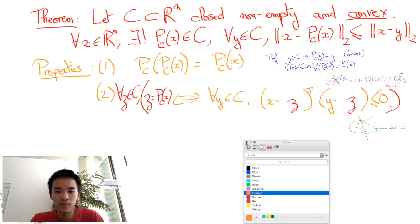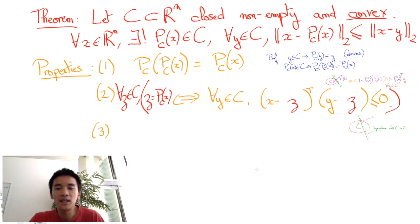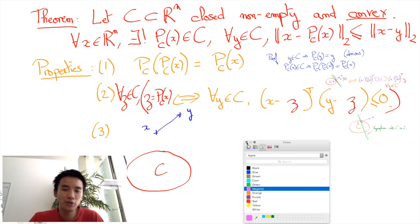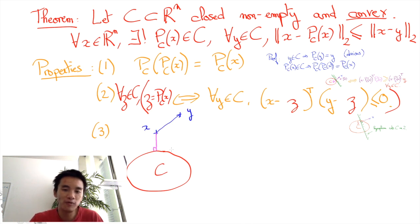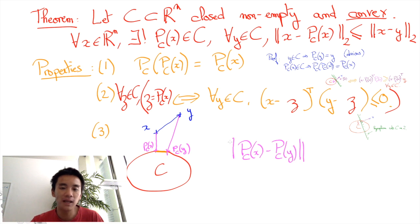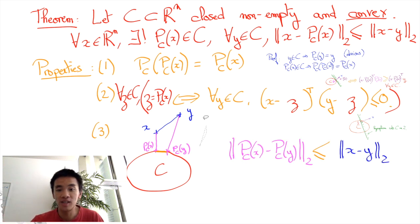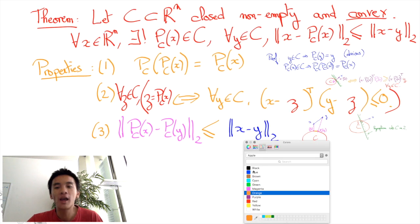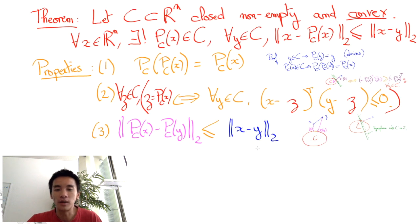A third nice property is that the function PC is non-expansive. In other words, if we move from X to Y, then the projections will move from PC of X to PC of Y. The non-expansive property asserts that the motion of the projections will necessarily be less than the motion of X to Y. Formally, this corresponds to the inequality: PC of X minus PC of Y is at most X minus Y.